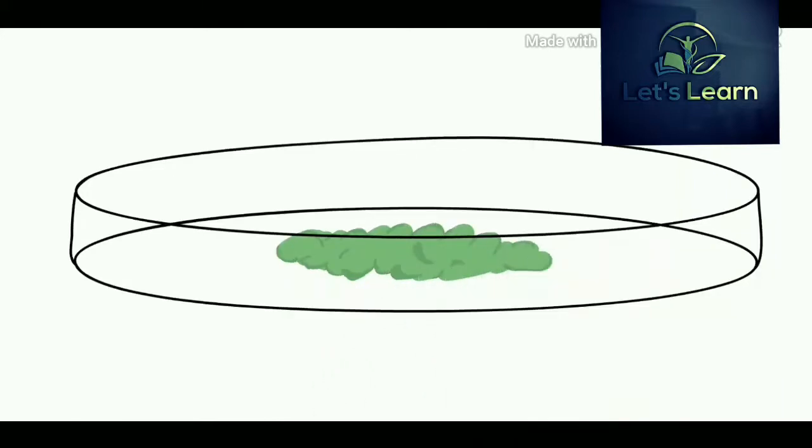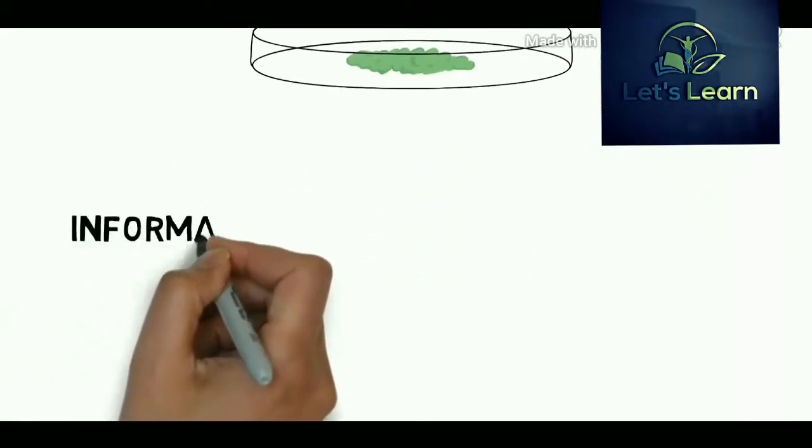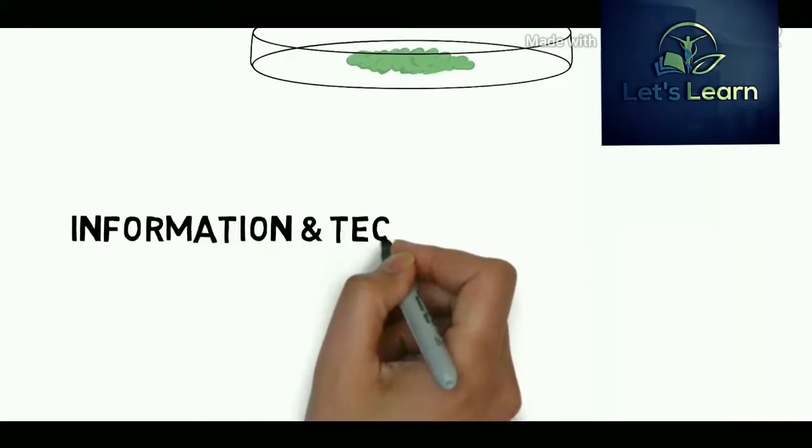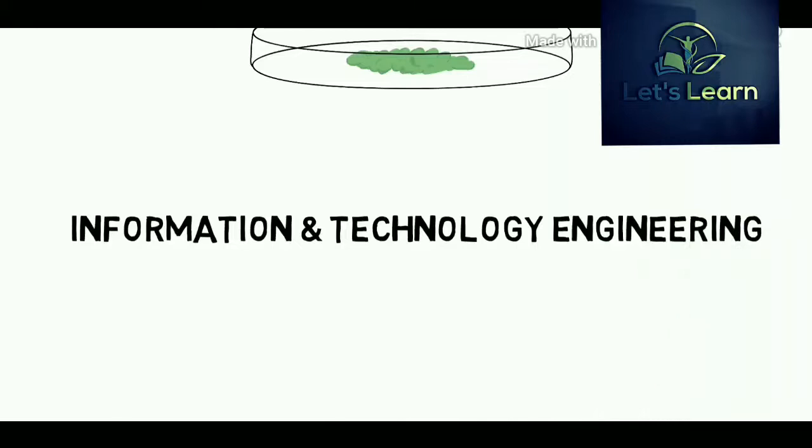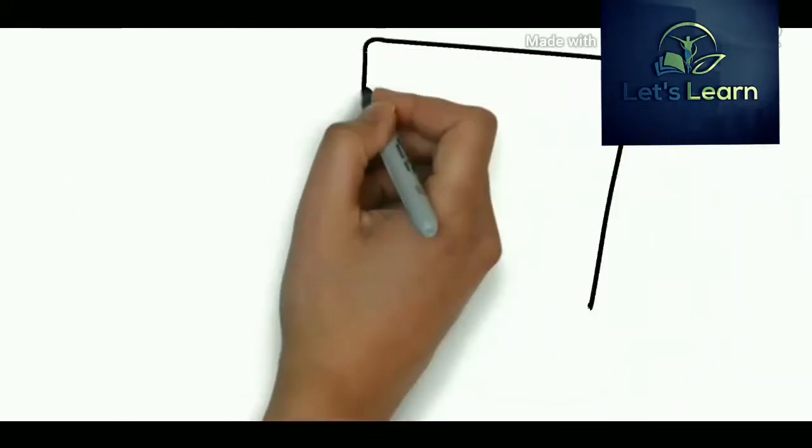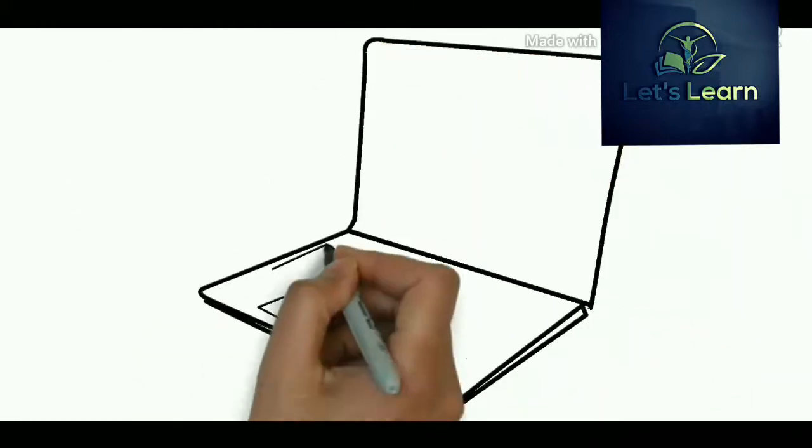Let's see our next engineering branch, which is information and technology engineering. Information and technology engineering is an engineering division which concentrates on the study of utilizing computers and telecommunications in order to control, gather, store, and circulate information.